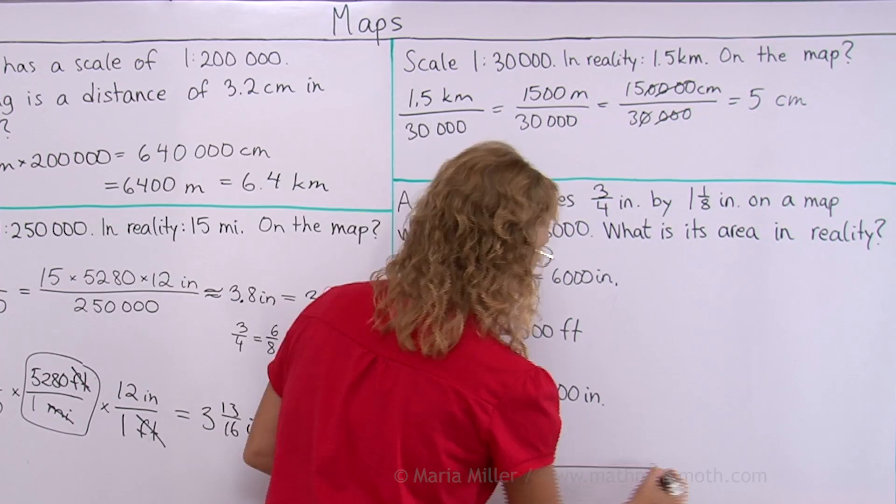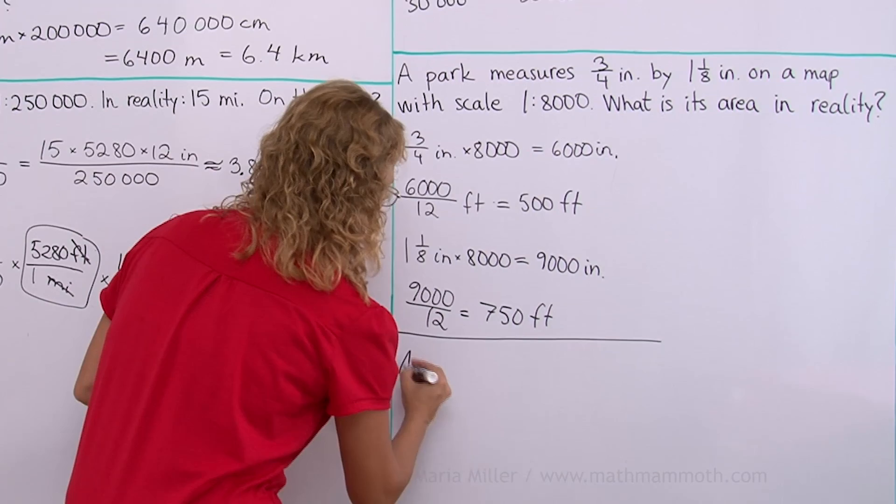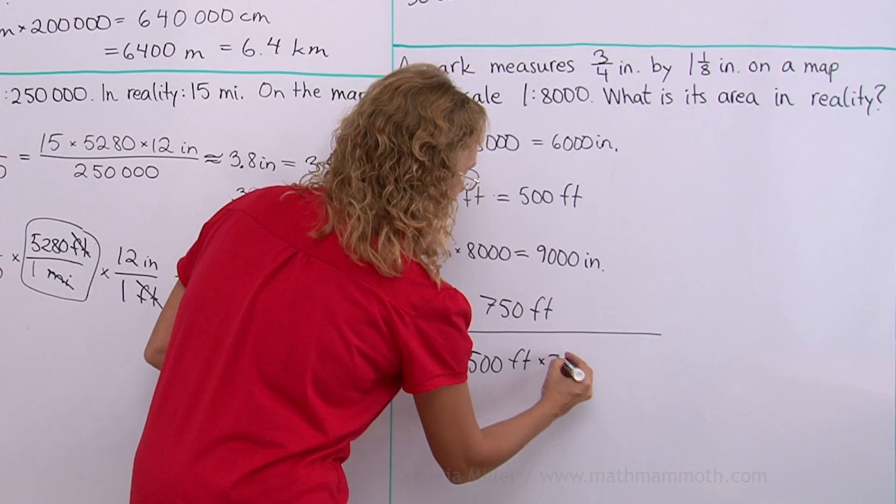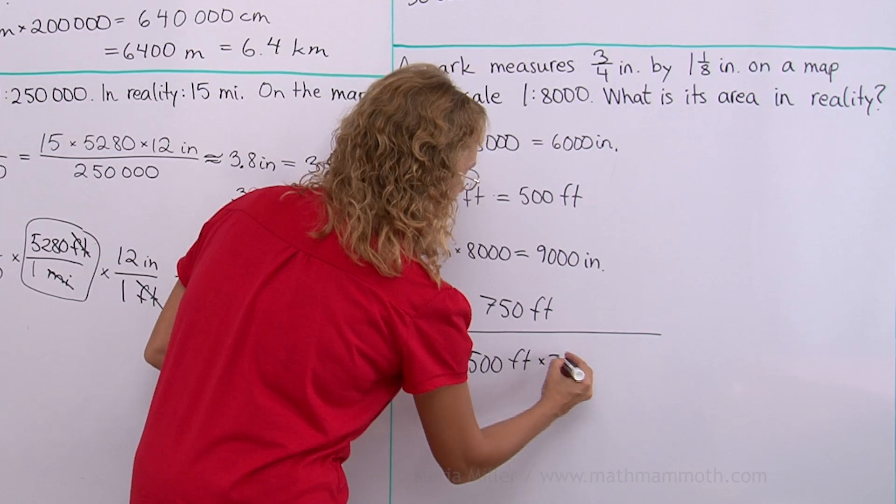And of course now all we need to do is just multiply those two to get the area. 500 feet times 750 feet. And we get 375,000 square feet. All right. It's a good size park. We're all done. Now you're ready to go practice on your own.